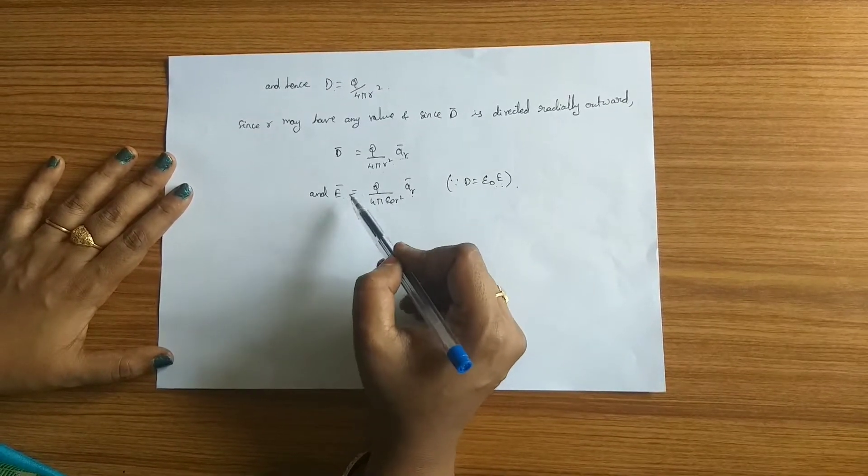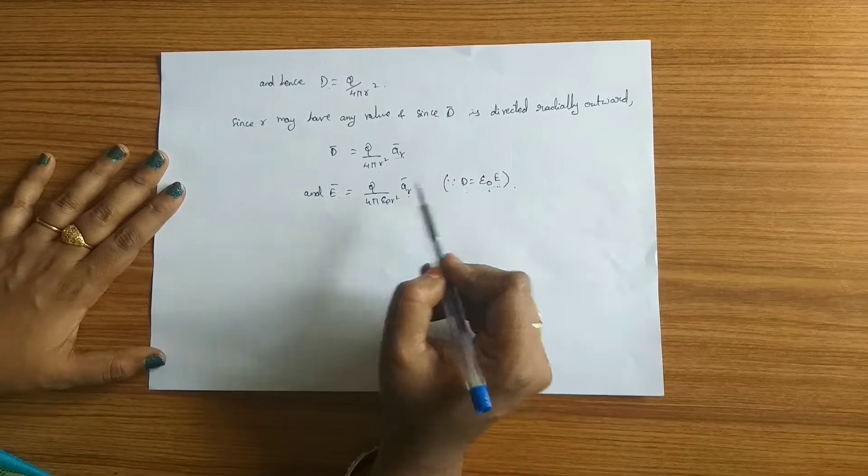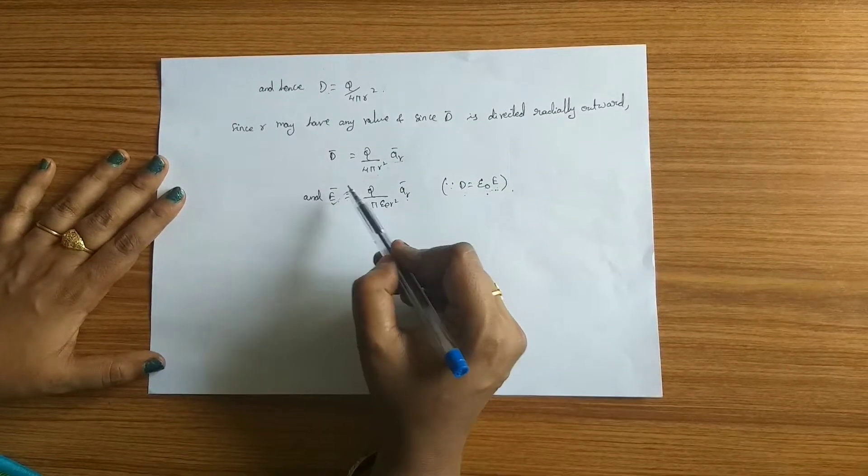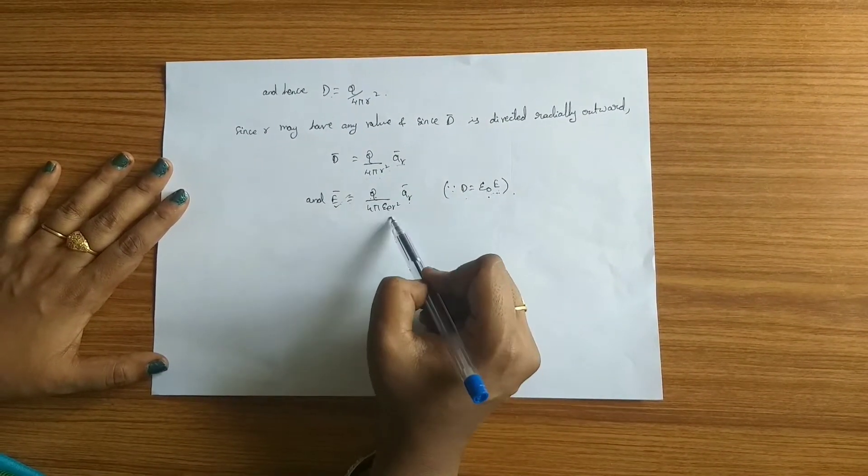This is obtained from the relation that D equals epsilon E. From this we are obtaining electric field intensity due to a point charge at point P. Thank you.